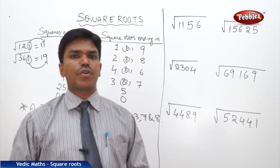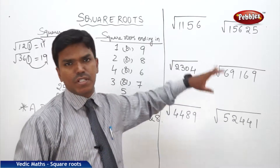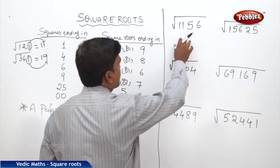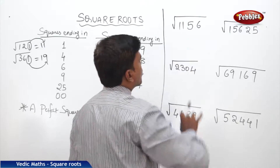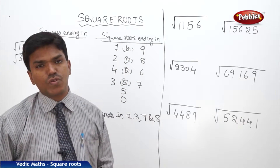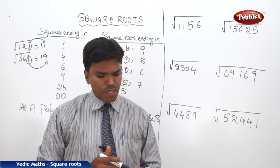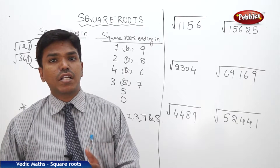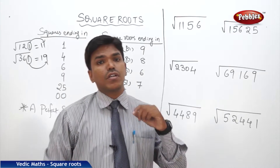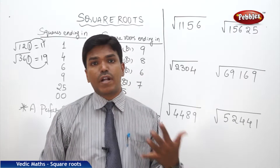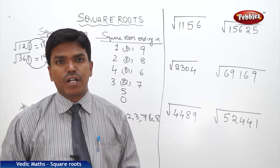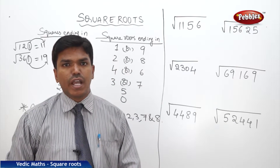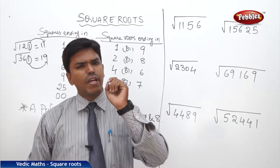Now we will discuss how to find out the square root of a problem, taking some examples. Suppose I want to find out the square root of the four-digit number 1156. To find the square root of any triple-digit number is very easy because it comes under 30 squares. But for a four-digit or five-digit number beyond 30 squares, it will be a little difficult. Here, we are going to find out the square root of four-digit or five-digit numbers in very easy ways.